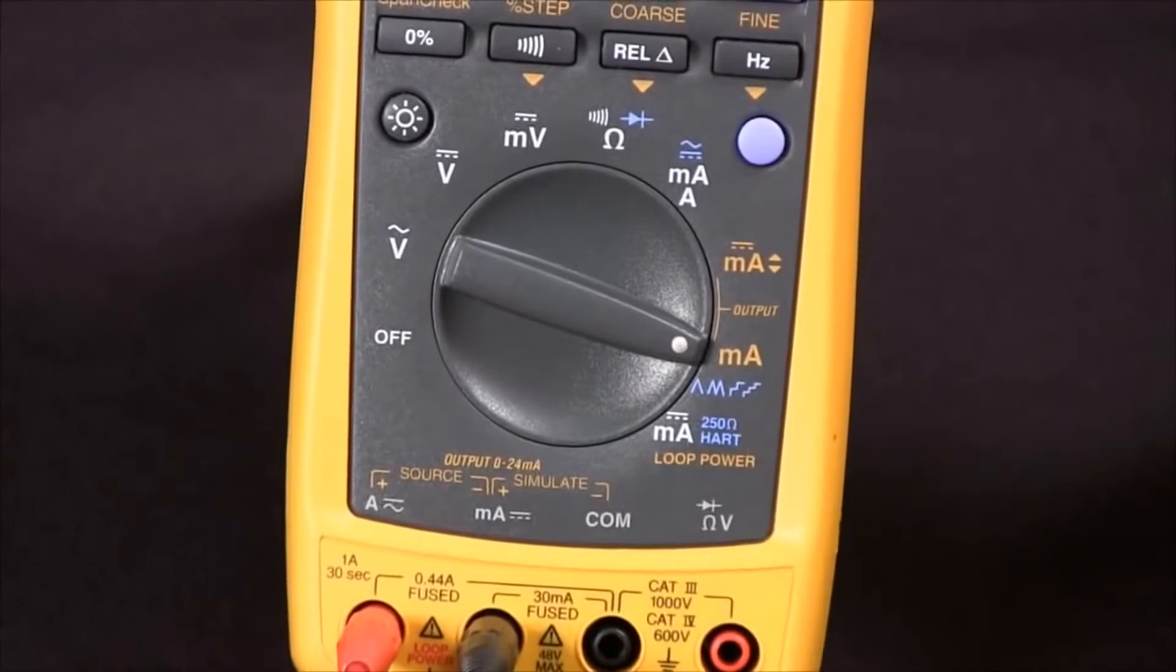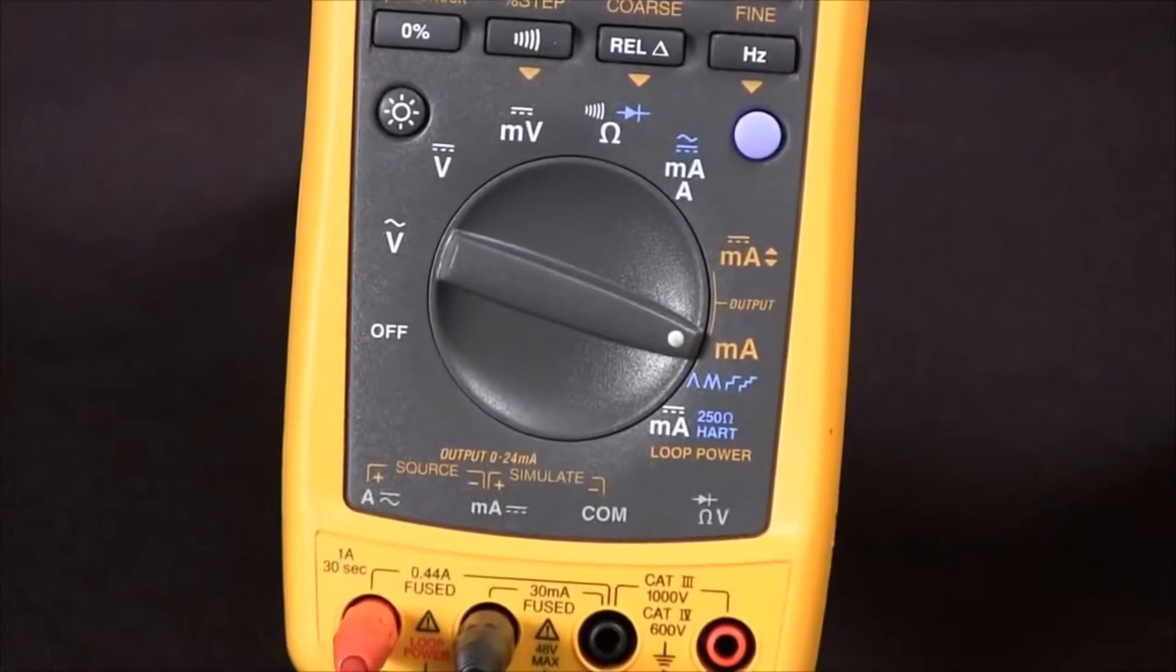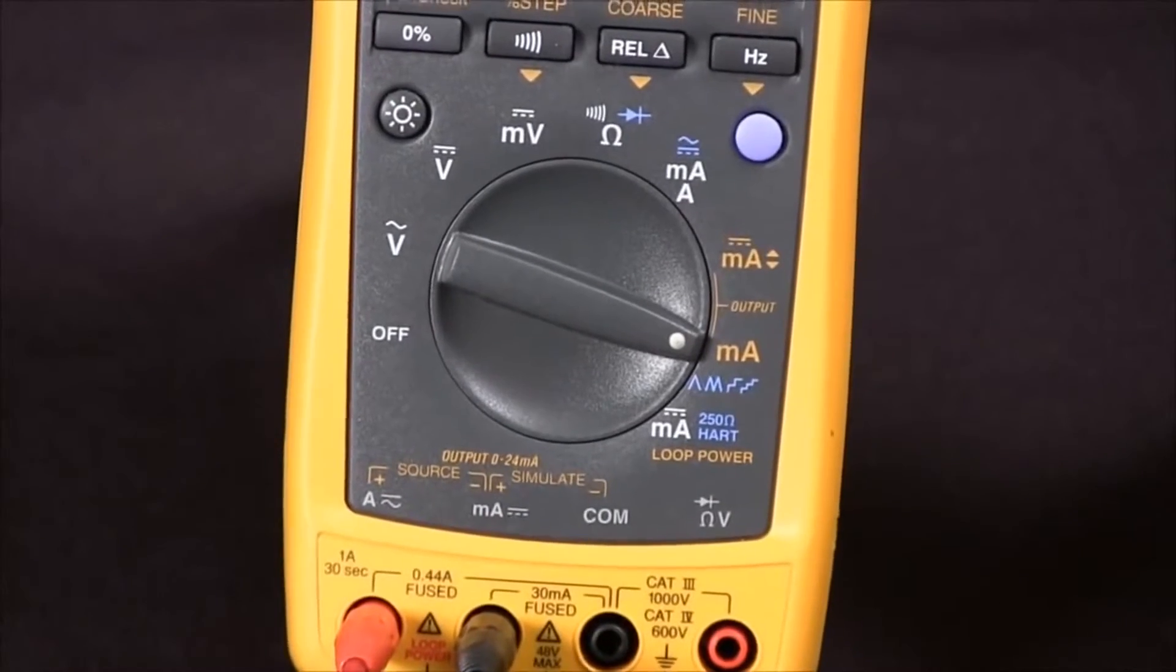And that's how we source 4 to 20 milliamps DC with our 789 process meter.